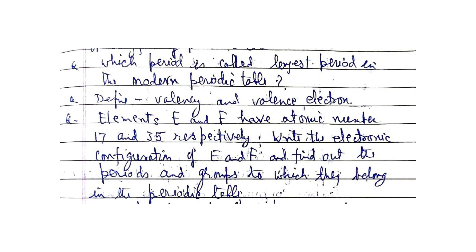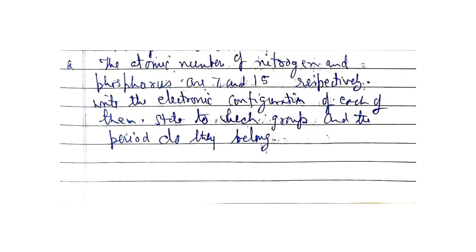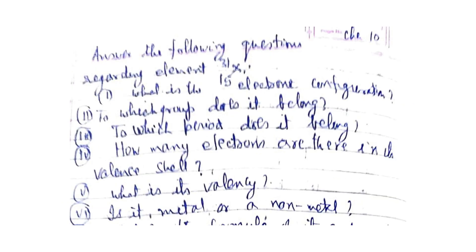Define valency and valence electrons. Elements E and F have atomic numbers 17 and 35 respectively — write the electronic configuration of E and F, and find out the periods and groups to which they belong in the periodic table. The atomic numbers of nitrogen and phosphorus are 7 and 15 respectively — write the electronic configuration of each and state to which group and period they belong.